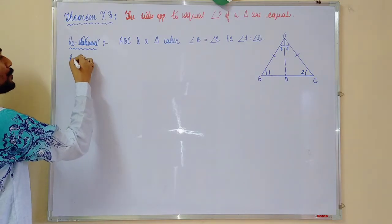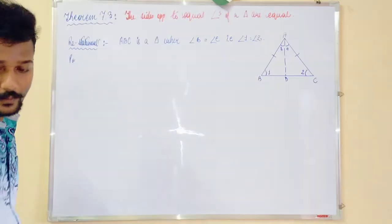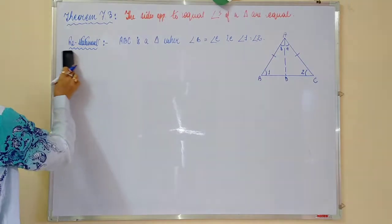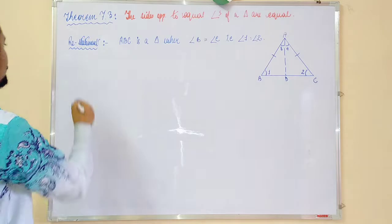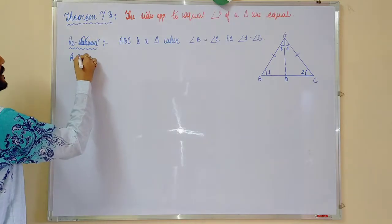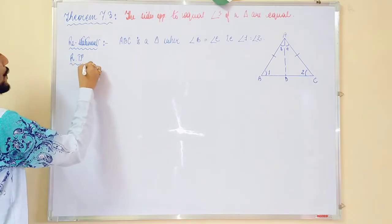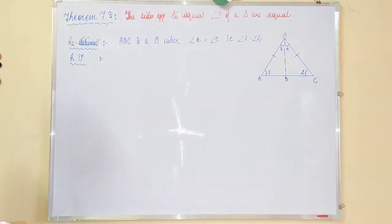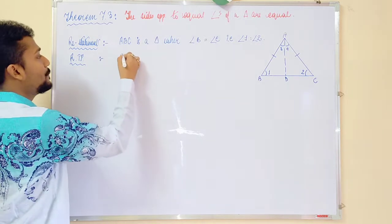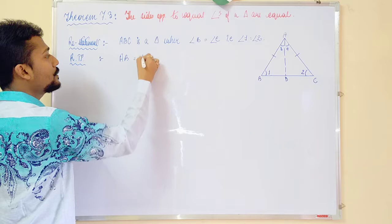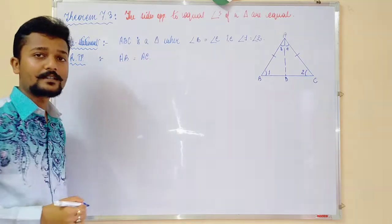Next, proof. Oh, sorry. It will be required to prove. So, what we need to prove? We need to prove that AB is equal to AC now.